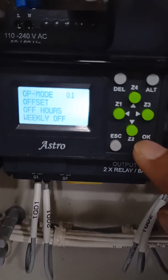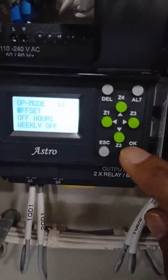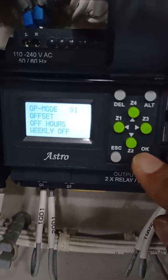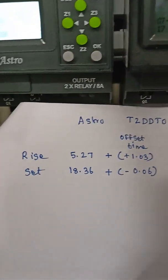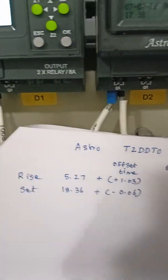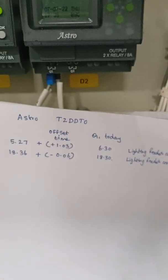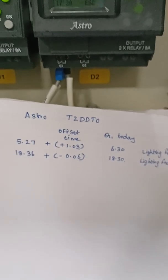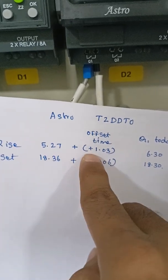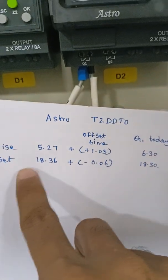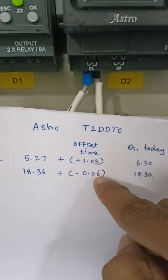The main area is the offset value. By setting the values here, you can turn the feeders on and off according to your required time. I already noted my sunrise and sunset values: 5:27 and 18:36. I want to switch off my feeder at 6:30 in the morning and switch on my feeder at 6:30 in the evening. So: 5:27 plus 1:03 equals 6:30, and 18:36 minus 0:06 equals 18:30, which is evening 6:30. These offset values you need to set in the offset field.